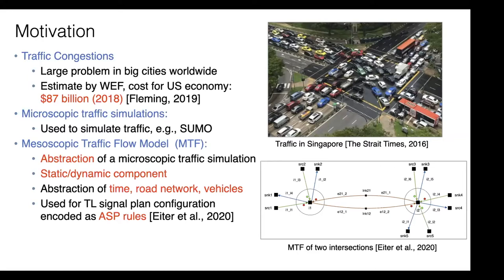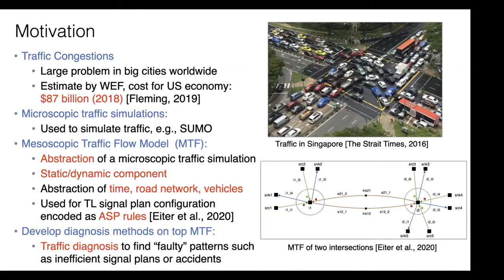Here's an example on the lower right showing one of these models. It has static and dynamic components - an abstraction of time, road network, and vehicles. We don't simulate each vehicle anymore but collections of vehicles. This was used in previous work for traffic light signal plan configuration, but having nice signal plans doesn't mean we know the reason for a problem.